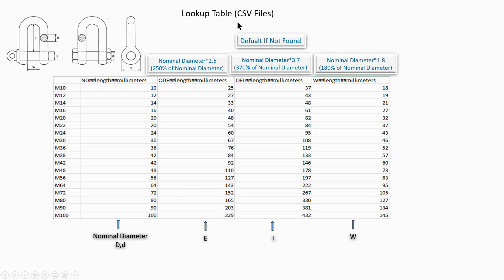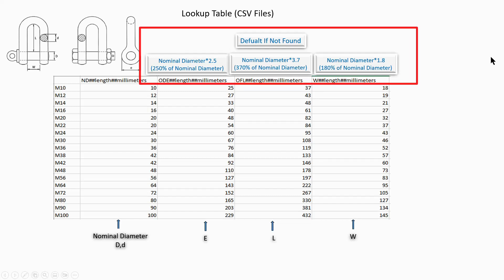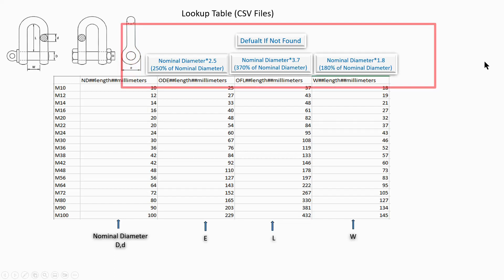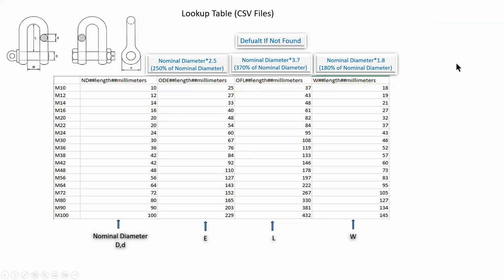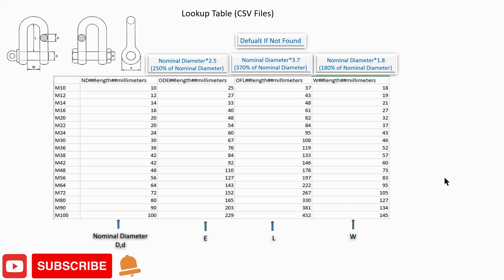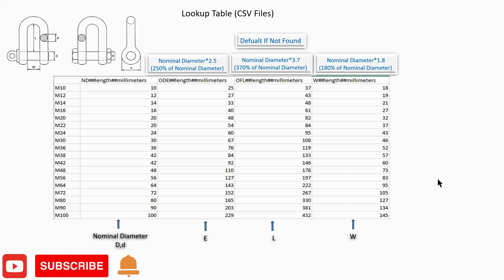There are M10 to M100. I will use those formulas for default when not found. Before going to Revit, I would like to request you to subscribe to the channel and click the notification bell for the next video.